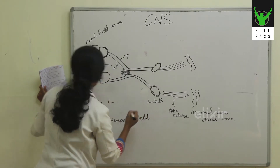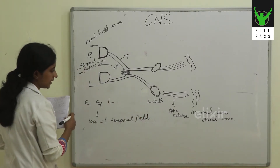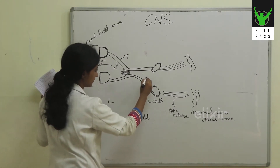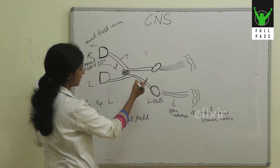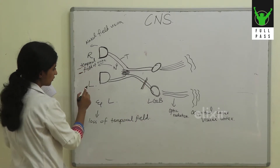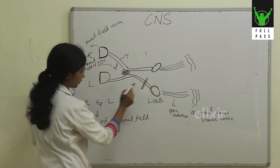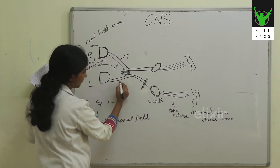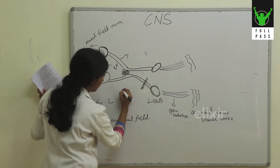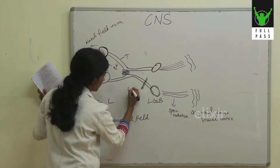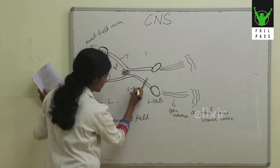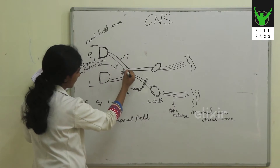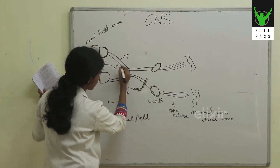On both the right eye and left eye you have a loss of temporal field of vision, and that is what we call bitemporal hemianopia. If you have a lesion in the optic tract — for example, a lesion on the left optic tract — the fibres affected are the temporal fibres of the left eye and the nasal fibres of the right eye, because of the crossover.